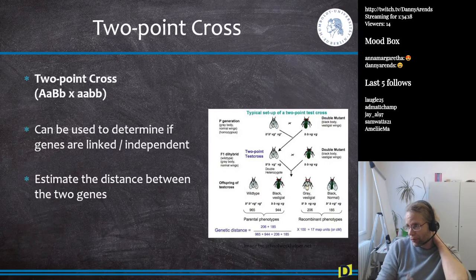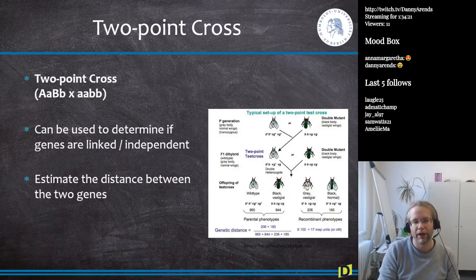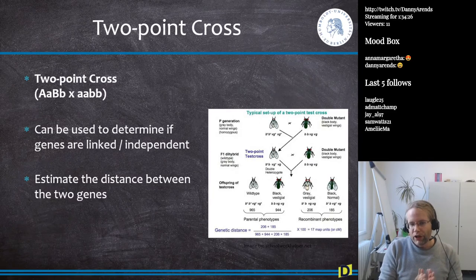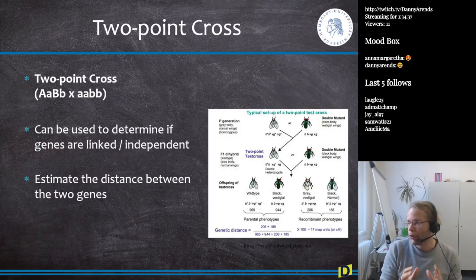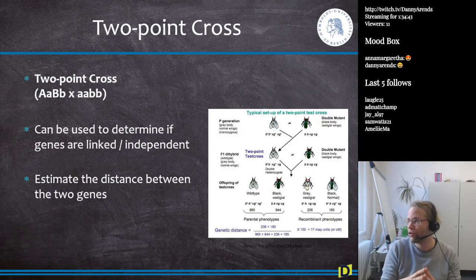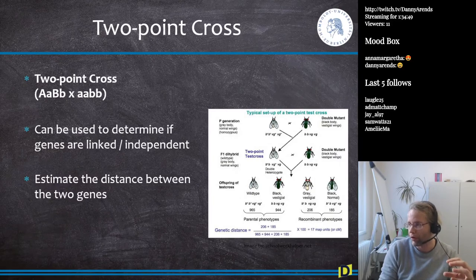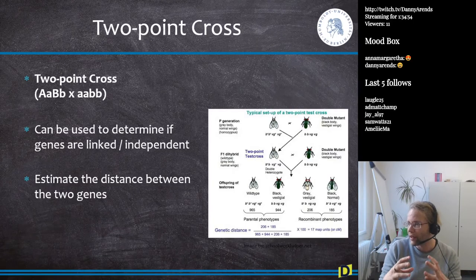So that's the two-point cross. We call it a two-point cross because we are looking at two points in the genome, or two genes, and this type of two-point cross can be used to determine if genes are linked — connected on the same chromosome — or if they are independent, on different chromosomes. It can also be used to estimate the distance between two genes.